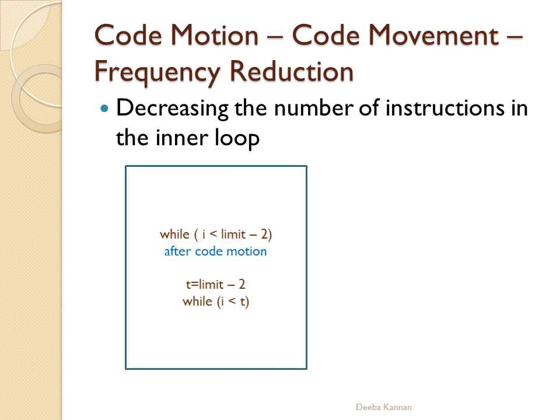Consider this first example with a while statement: while i is less than limit minus 2. If the limit value is constant and not changed in the body of the while statement, then limit minus 2 has a constant value throughout the loop execution. The problem is that limit minus 2 is calculated at each and every iteration. To overcome this, we assign a temporary variable t = limit minus 2, and rewrite the while loop as: while i is less than t. Now the calculation of limit minus 2 does not repeat n times. This is called frequency reduction.